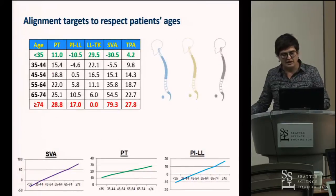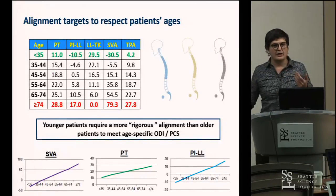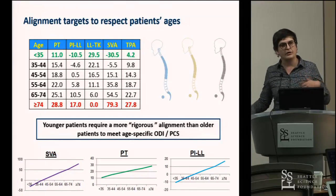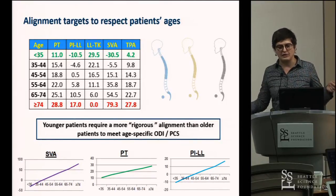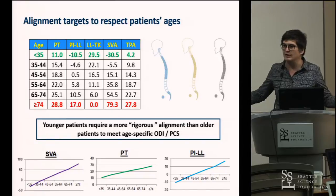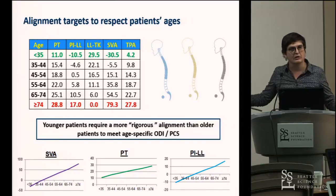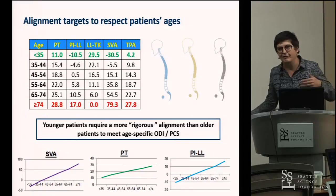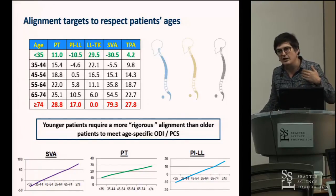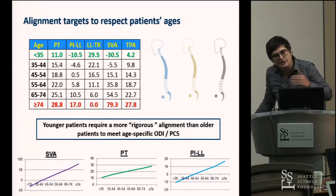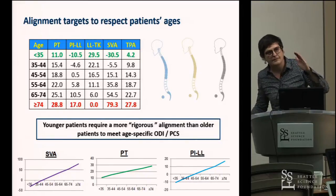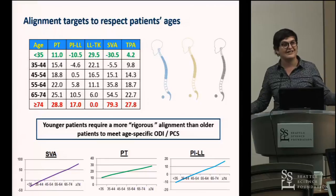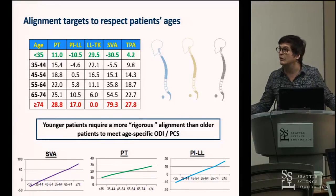Depending on the patient's age, you'll have different alignment targets. For a young adult you're not going to aim for the same alignment as a 70-year-old. Life is a kyphotic event — with age, kyphosis increases, lordosis decreases, and the trunk tilts forward. When you operate on older patients, you're not going to try to make them as straight as a 20-year-old.